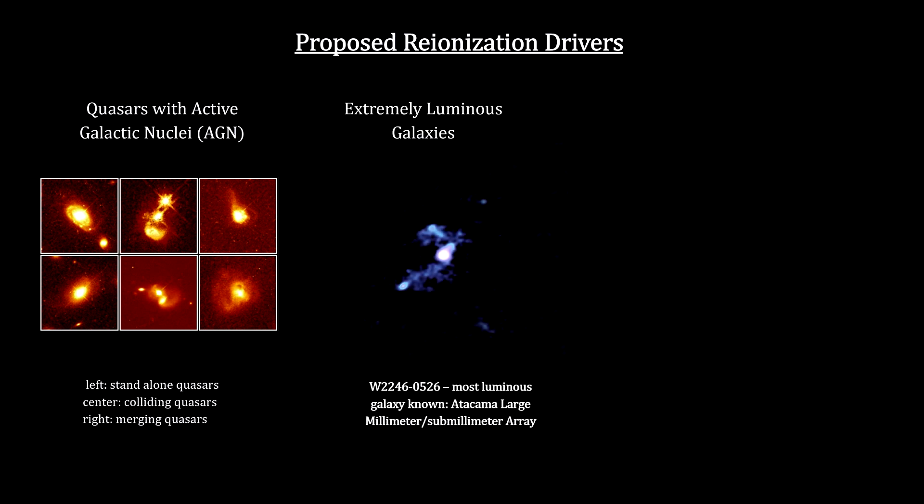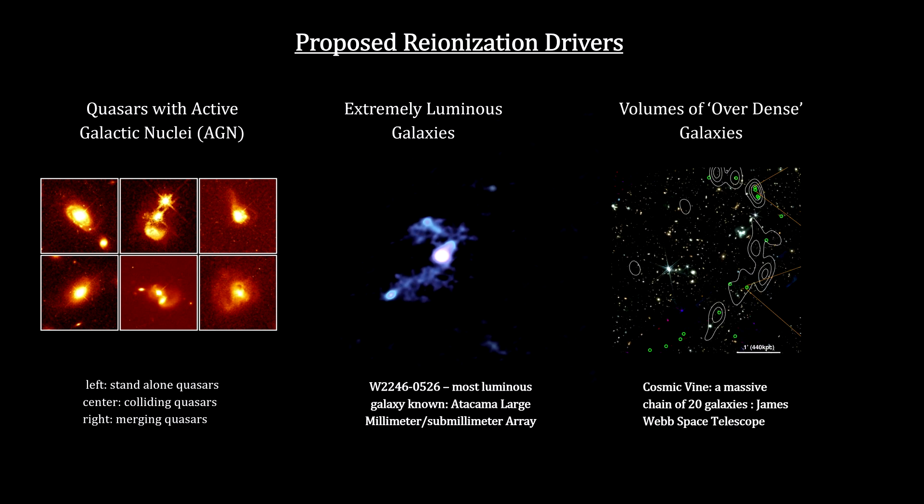The identification of sources driving cosmic reionization has been a matter of debate for decades. Some suggest that quasars could be the source. Others propose that bright galaxies generate sufficient ionizing radiation to drive this process. Others think it would take over-densities of multiple galaxies to do it.